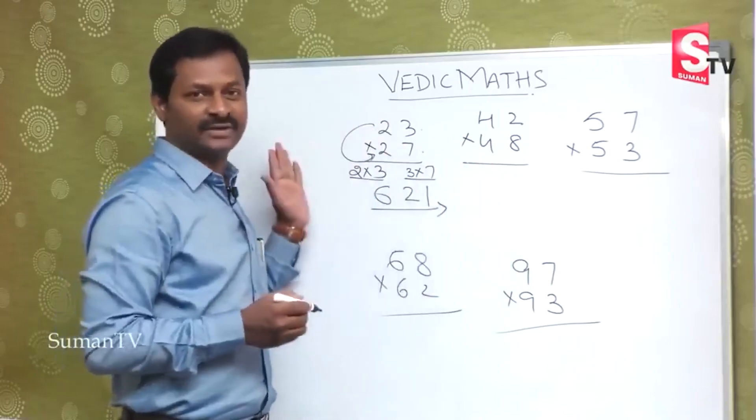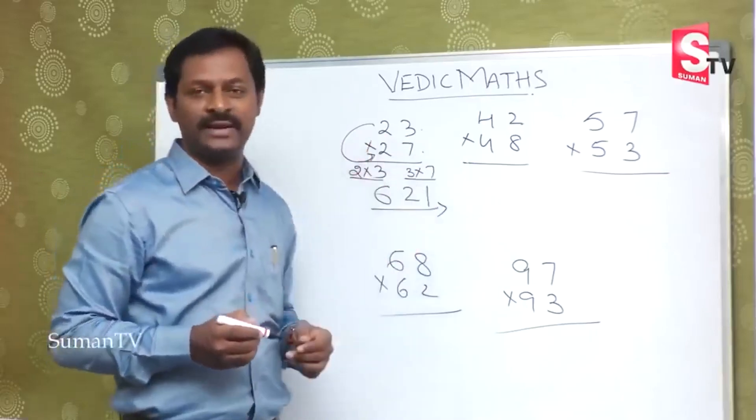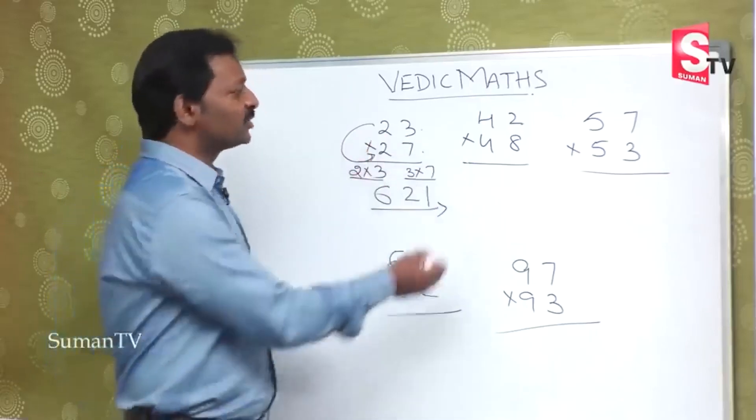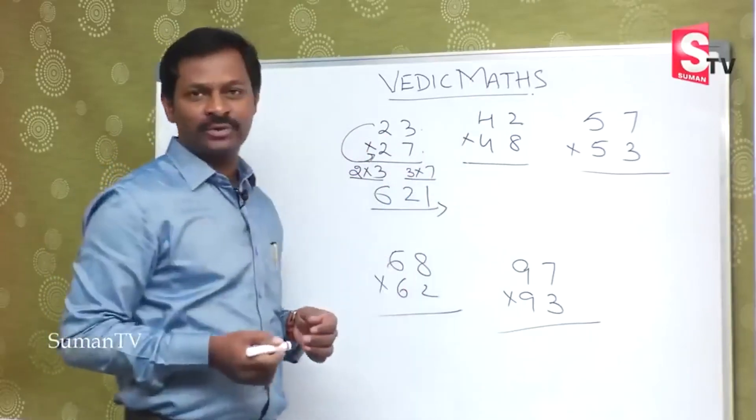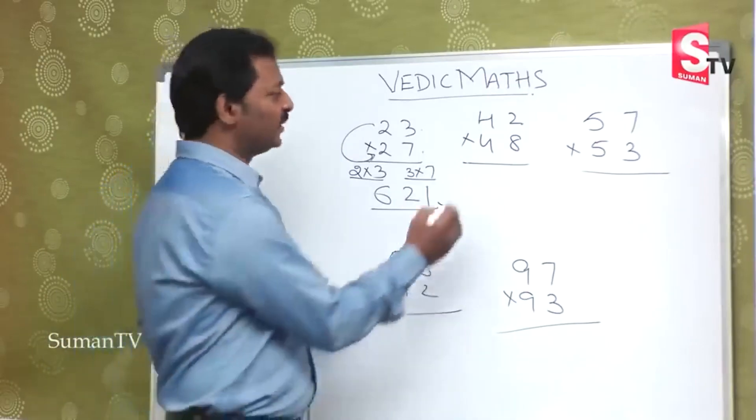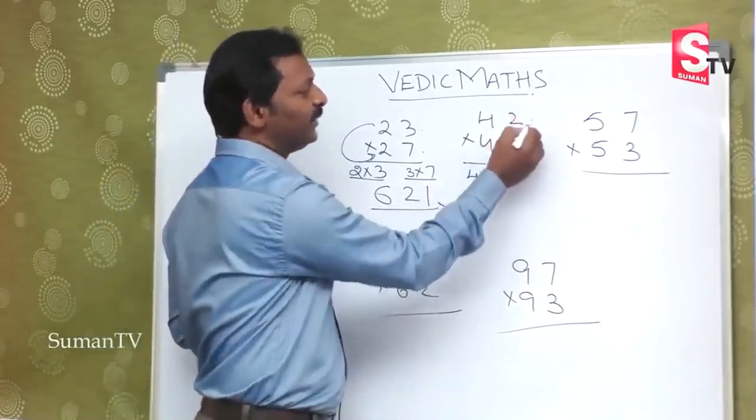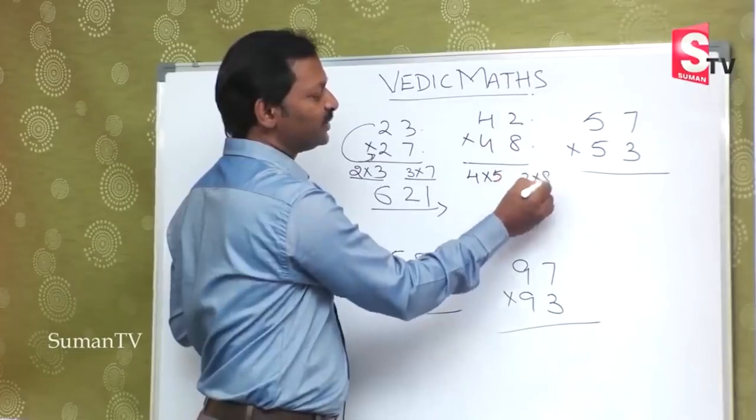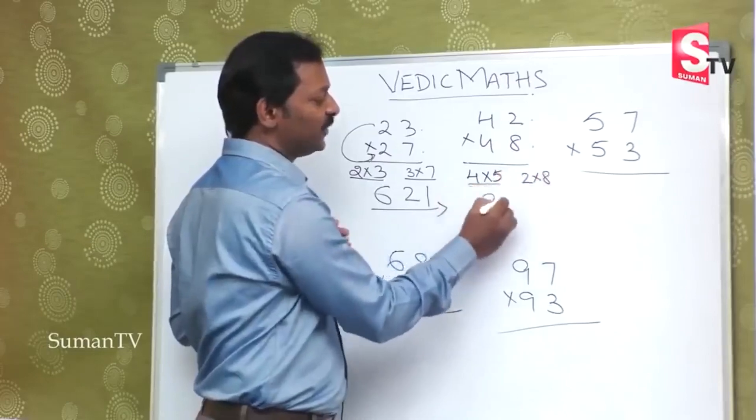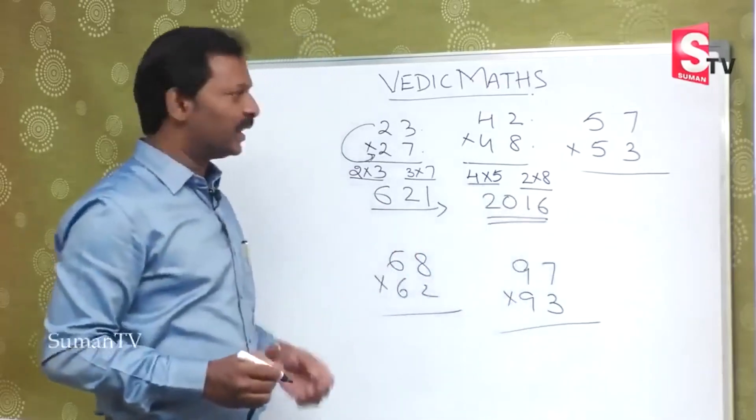4 and 4, so 4 is the first number, then consecutive number 5, that is 4 into 5 is multiplied. Next 2 into 8. 4 times 5 is 20, 2 times 8 is 16. The answer is 2016.